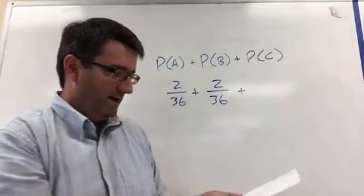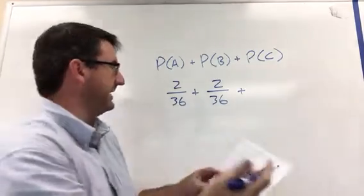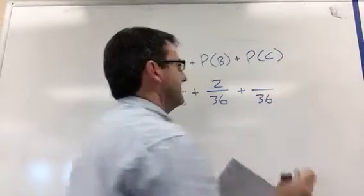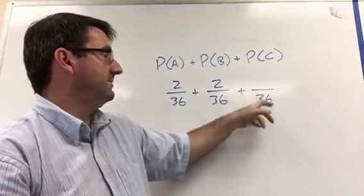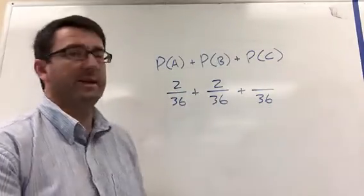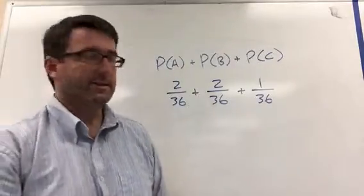And then for C, the probability of getting a 12. Again, there's 36 possible outcomes if you roll two dice. For the probability of getting a 12, there's only one way you can get a 12: a 6 and a 6.